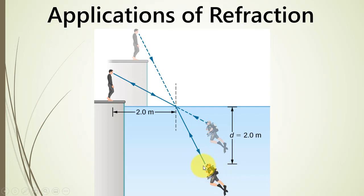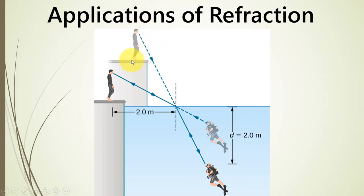Similarly, the light ray from the person on the cliff travels to the swimmer, who traces it back in a straight line and sees the cliff as higher than it actually is. So both observers see apparent locations, not actual locations, due to the bending of light. The person on the cliff thinks the swimmer is not very deep, while the swimmer sees the cliff as much higher above the pond than it really is.